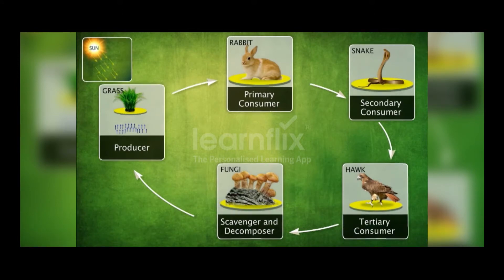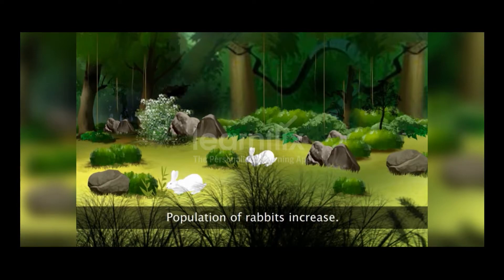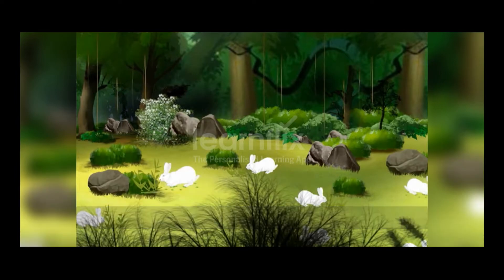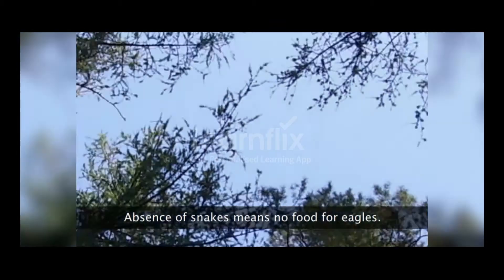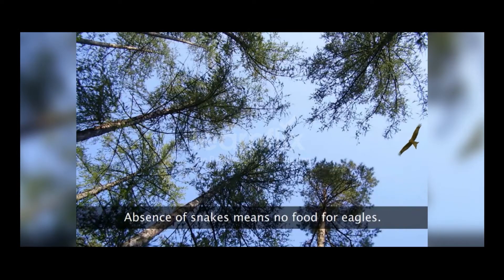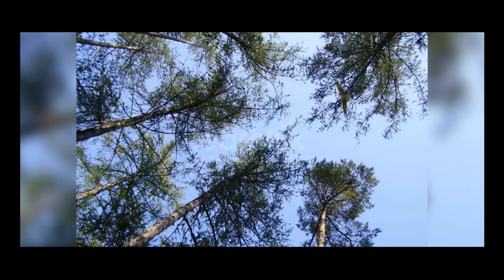Let's see what happens when we remove the snake from the chain. As there are no snakes to consume the rabbits, the rabbits increase in number. They consume all the plants in the forest and are left with no food. The eagles have no food due to the absence of snakes in the forest. As a result, the population of all the organisms in the food chain gradually starts to dwindle.